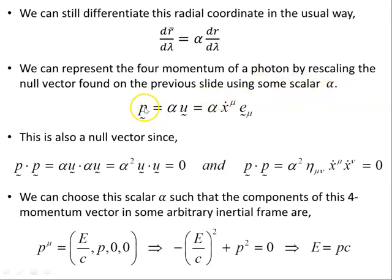Using some scalar alpha, we get the four momentum is alpha times U. We know that both the four velocity U and the four momentum P point in the same direction. They're just multiples of each other, they're parallel to each other. So alpha is X dot mu E mu, writing it out in component and basis form. This is also a null vector since P dot P is alpha U dot alpha U is alpha squared U dot U. Well U dot U is zero, so alpha squared non-zero times this zero object here is zero. So both are null vectors, the four momentum and the four velocity.